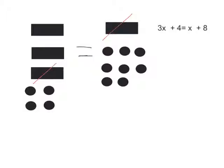How would I show that with math? Crossing out is the same as subtracting. So I subtract x from both sides. That would leave me with 2x plus 4 — I still have 4 circles on the left and I still have 8 circles on the right.